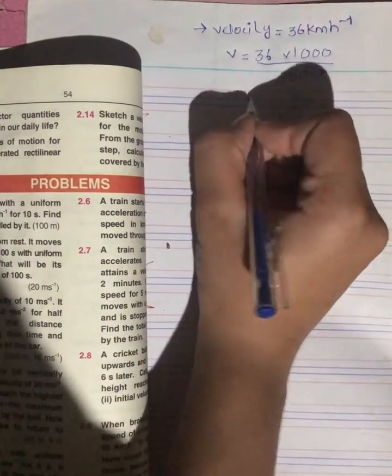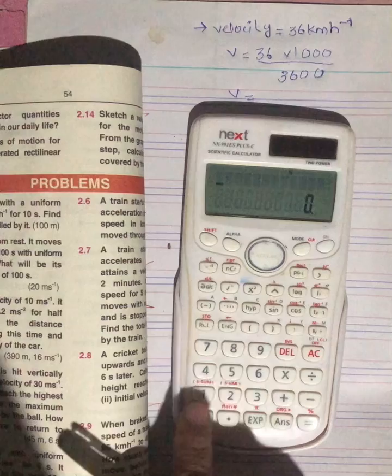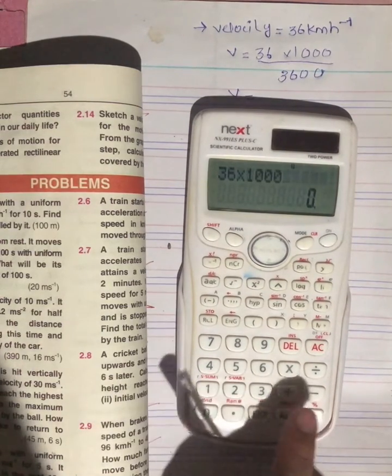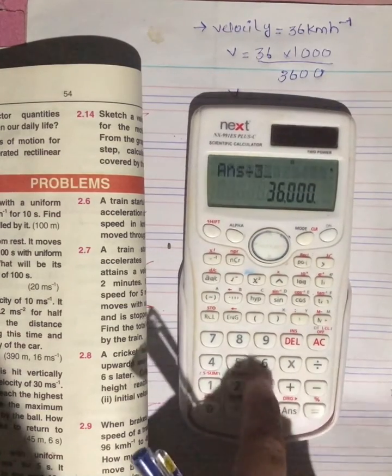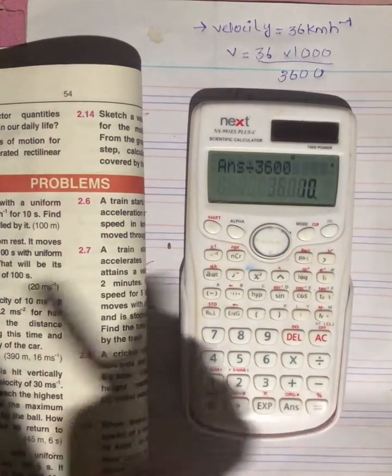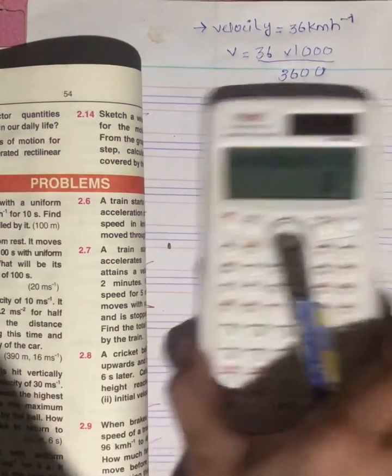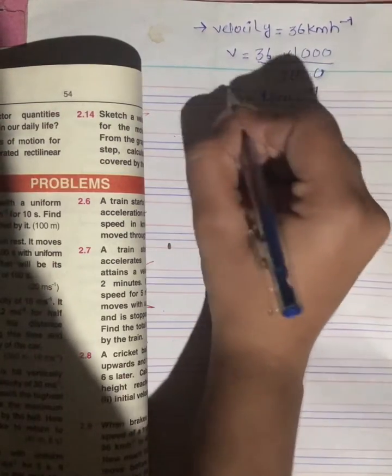Then v is equal to, we have the value of 36 into 1000, that divided by 3600. That is 10. The value we have is meter per second, 10 meter per second, that is velocity.